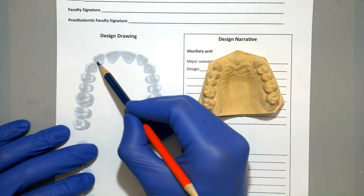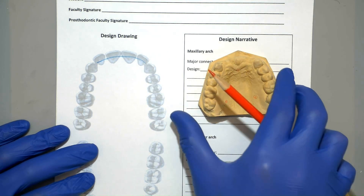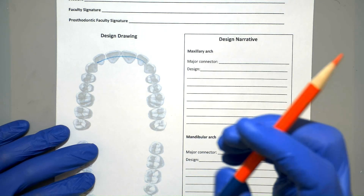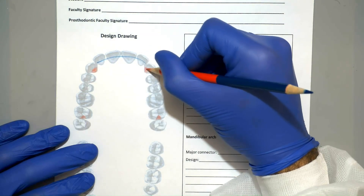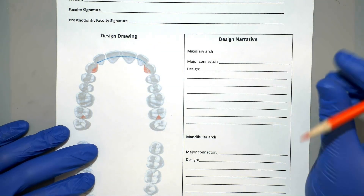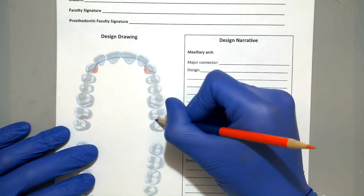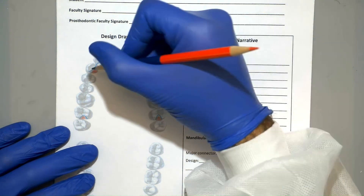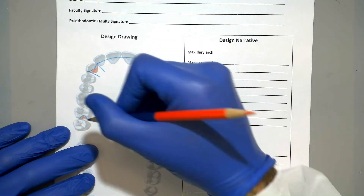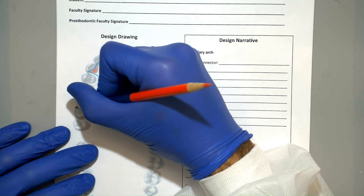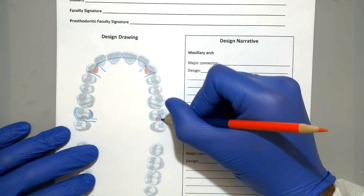Now we're going to go ahead and draw our design on paper. I use the cast to identify which teeth are missing and mark them with a blue line going through the center of the missing teeth. Then use a red pencil to draw all the different rest seats on all the abutment teeth. We'll switch over to the blue pencil and draw the rests over the rest seats in blue. We'll also start extending some minor connectors and drawing the cast circumferential clasps, extending minor connectors from those as well.